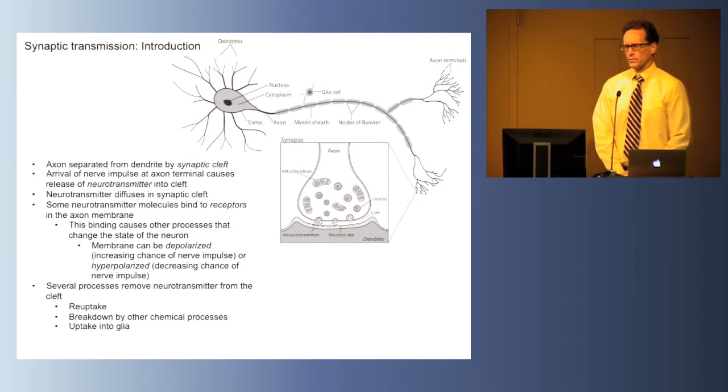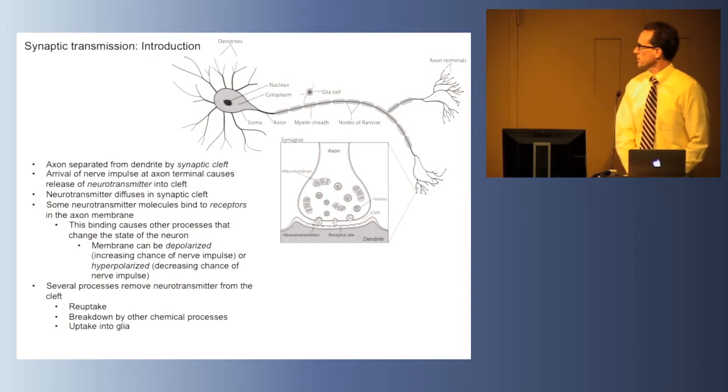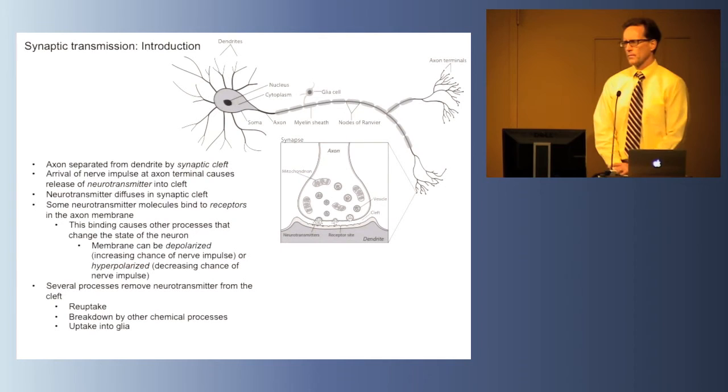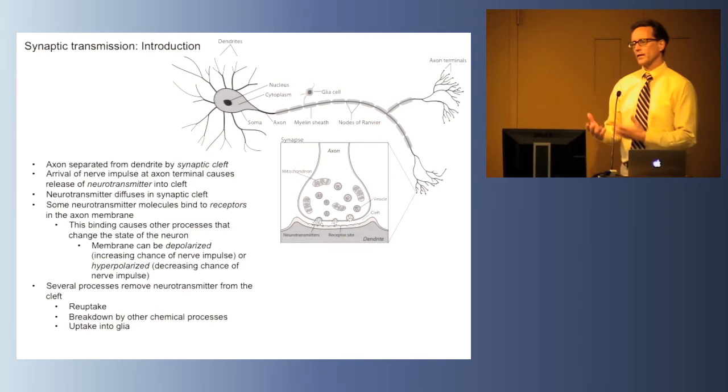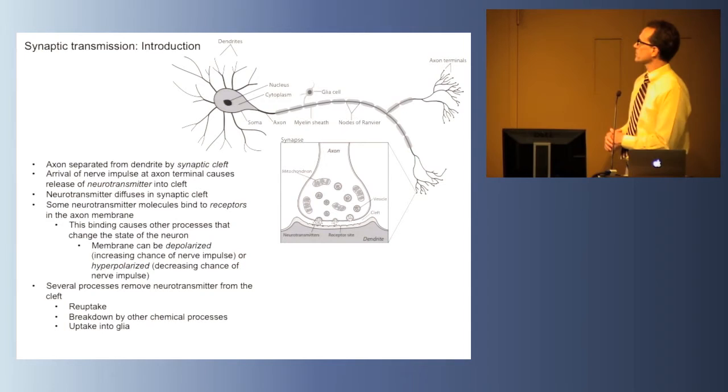These small dots are intended to represent the neurotransmitter released into the synaptic cleft, and now it just floats around. Some of them will float in such a manner that they come into contact with the post-synaptic dendrite. If they come into contact with the post-synaptic dendrite, they might come into contact with specialized molecular structures known as receptors. If the neurotransmitter connects or binds to the receptor, it's something like a key in a lock. Only certain keys will work in certain locks. Likewise, only certain neurotransmitters work with certain receptors. If the neurotransmitter binds to the receptor, then other things can happen, such as making it more or less likely for the post-synaptic neuron to discharge an action potential to influence another neuron downstream.